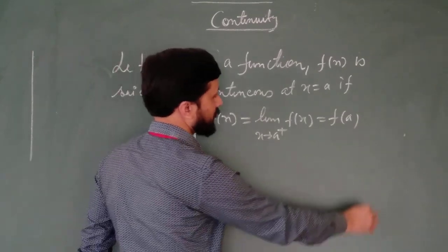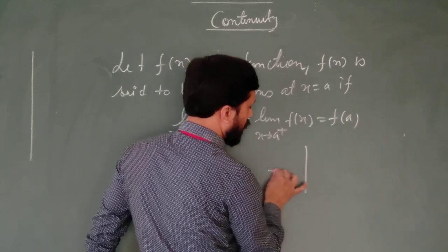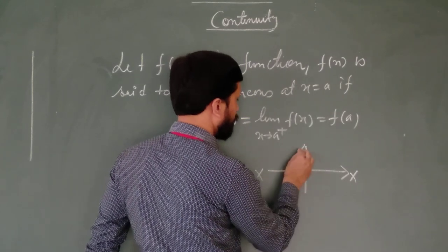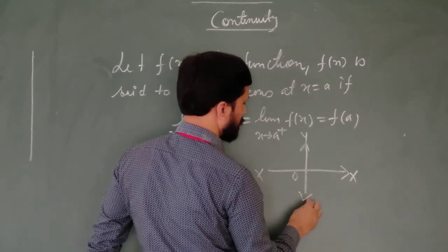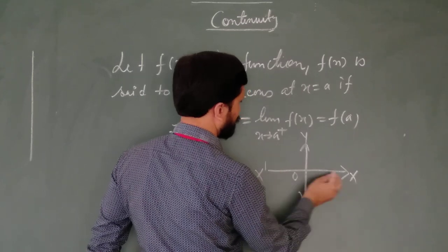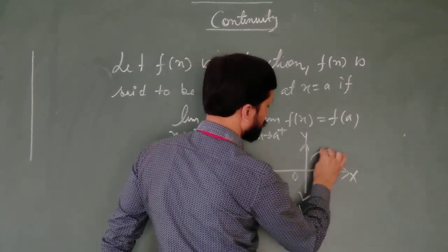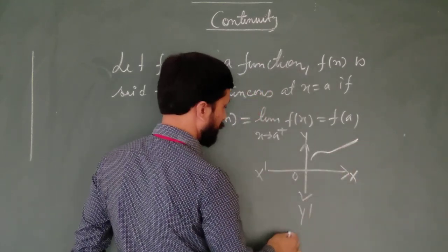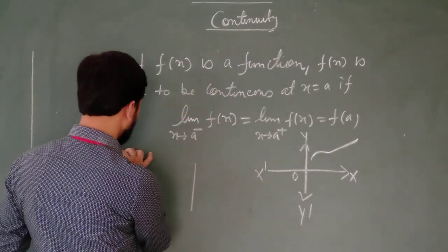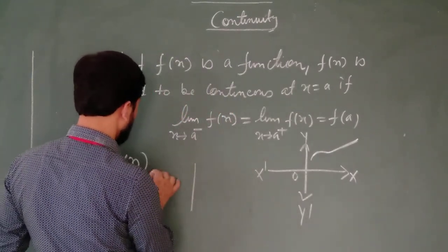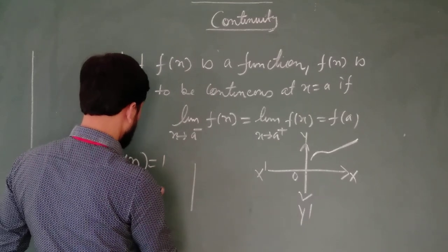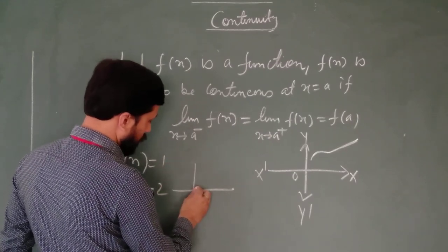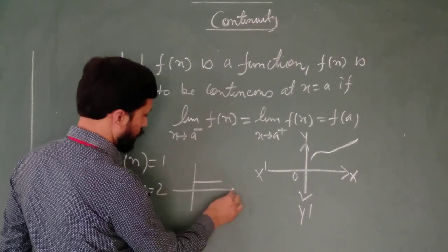In another way you can understand what is continuity. Suppose to draw a graph, if you don't have to lift your pen, then that type of graph for the given function is continuous. In order to draw this graph we are not lifting our pen. But if the data for f(x) is such that it is 1 and f(x) value is 2, we will get a line parallel to x axis.